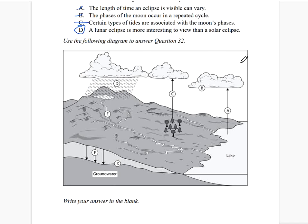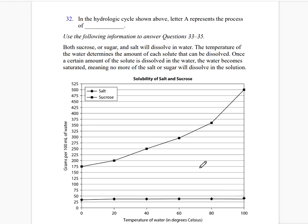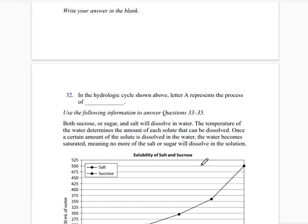We will use the following diagram to answer question 32. The diagram shows water uptake going to clouds, then precipitation, surface runoff, and groundwater. In the hydrologic cycle shown, letter A represents the process of evaporation. The correct answer is evaporation.